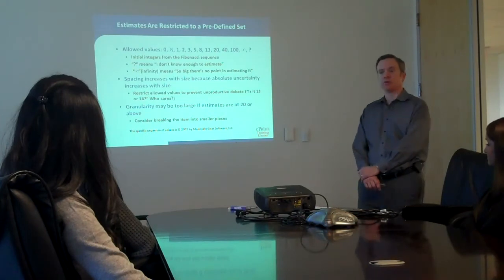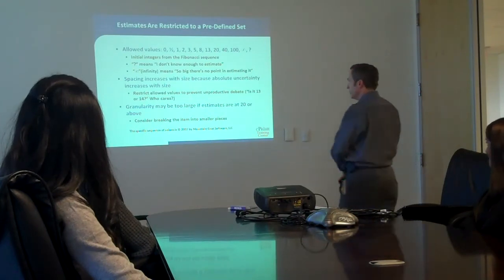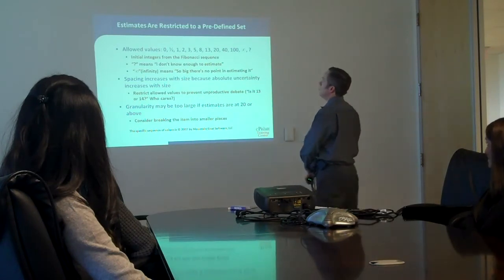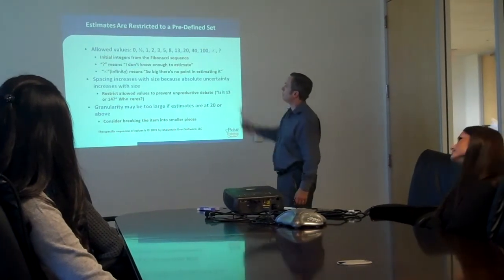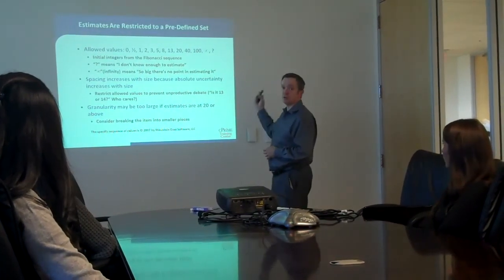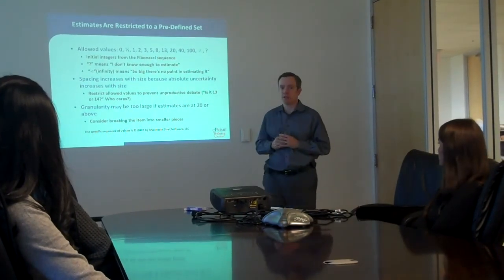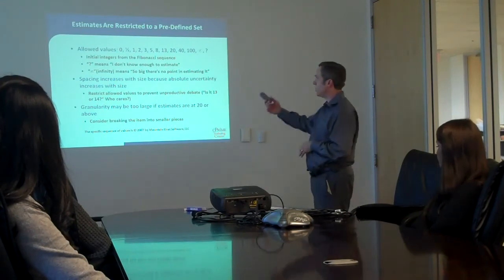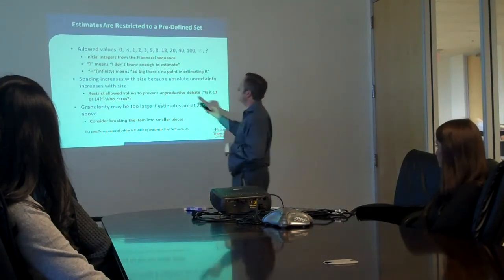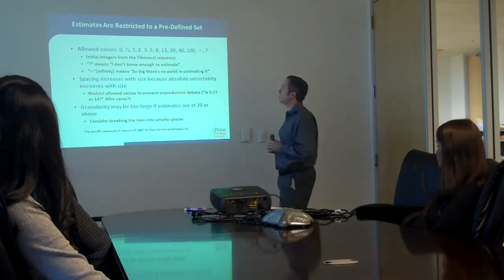One of the interesting attributes of card-based estimation is that the set of numbers we're going to pick is necessarily limited. For planning poker, the standard sequence is numbers listed above: zero, one-half, one, two, three, and so forth. The initial integers in the sequence come from the Fibonacci sequence, where each number is the sum of the two previous numbers. The one-half doesn't fit, and when we get up to 13 the next one ought to be 21, but it is actually 20.